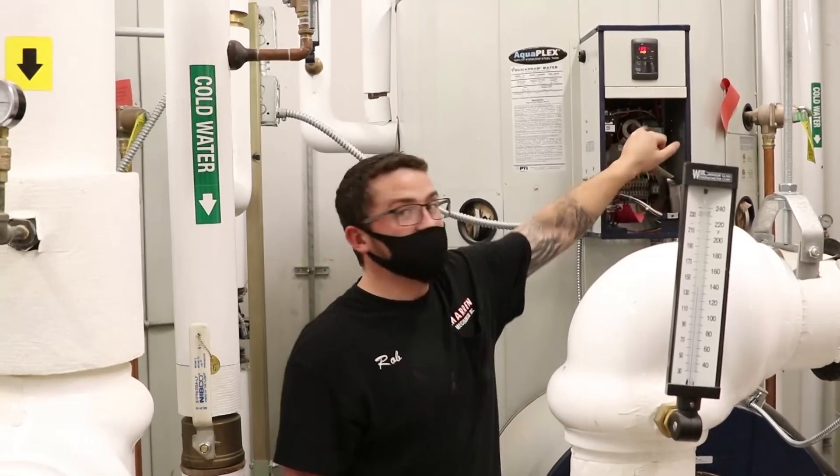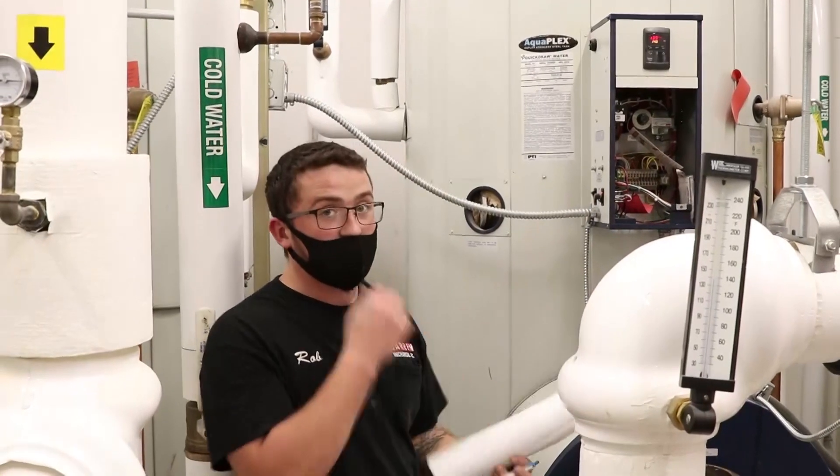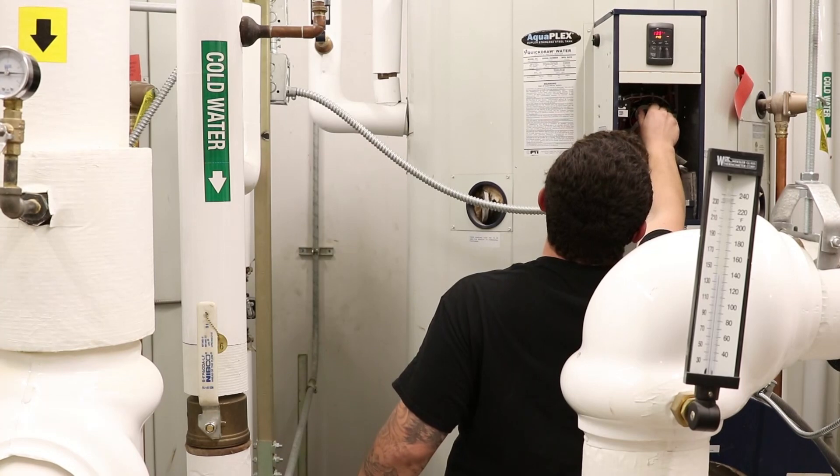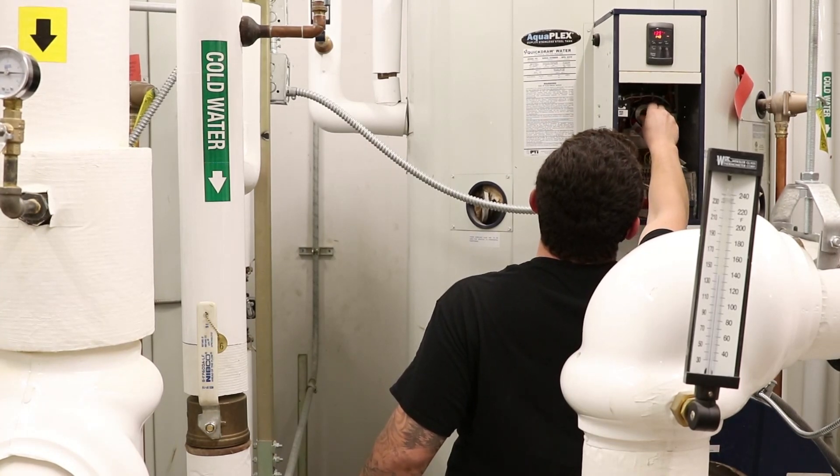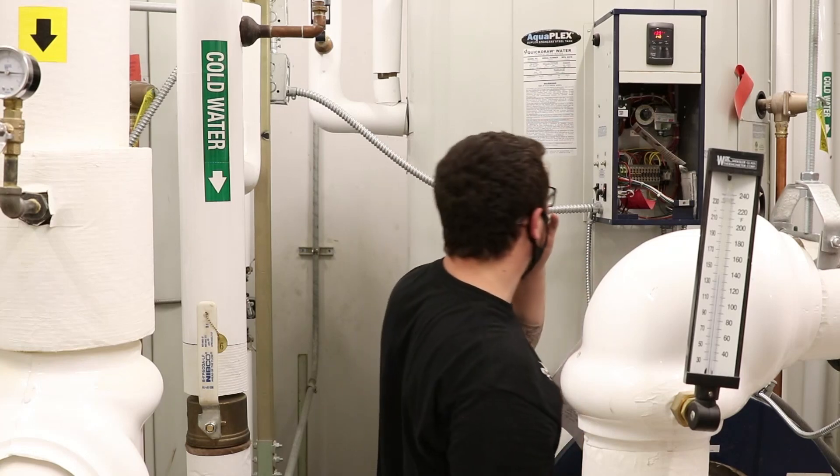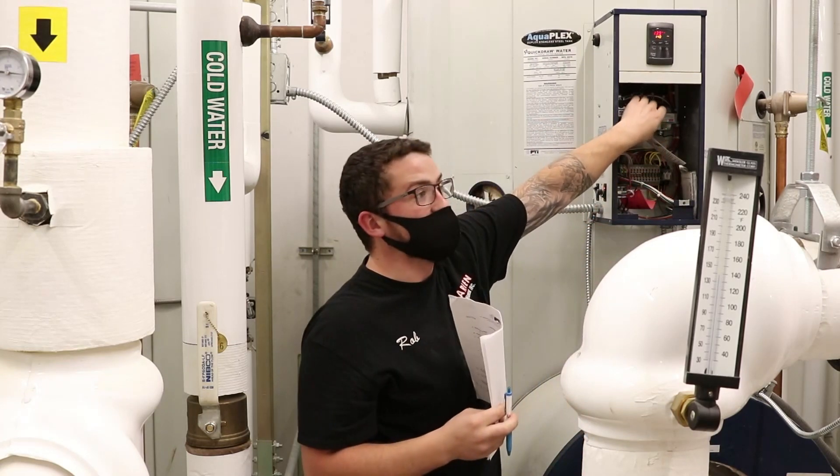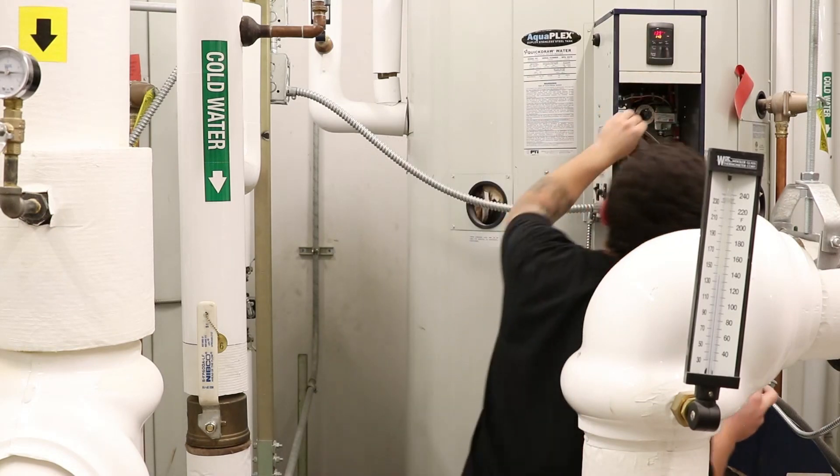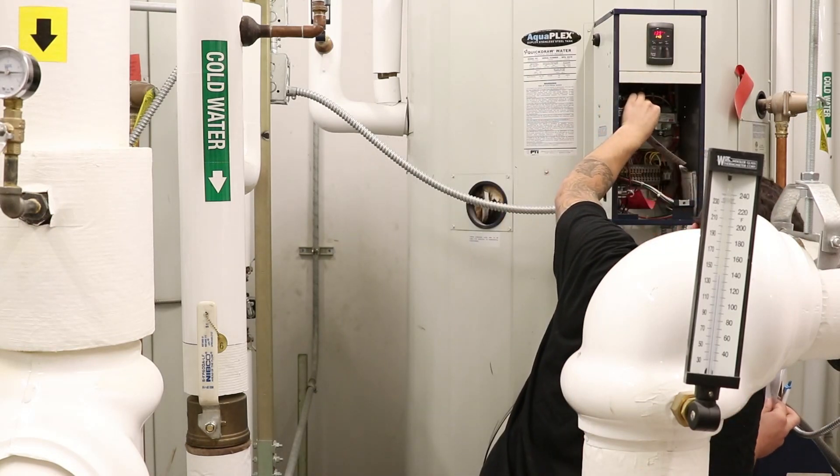This control clicks when it opens and closes, so if you touch this dial, you'll hear the control open and close. That should happen when the indicator is on the dial at the temperature that's in the tank. You'll be able to tell whether that's accurate or it's inaccurate based on when it opens and closes.